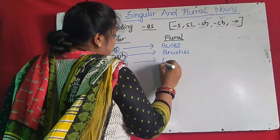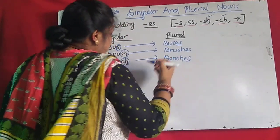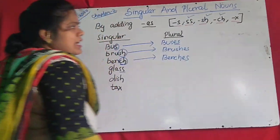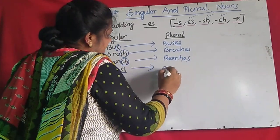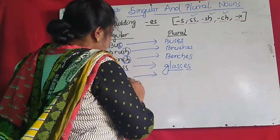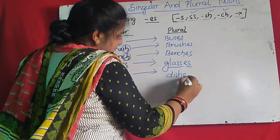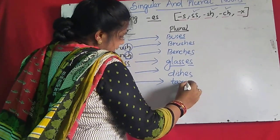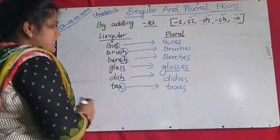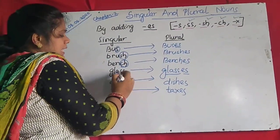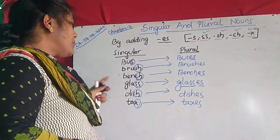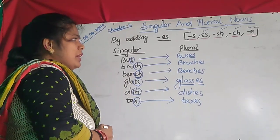Suppose 'bus' — the word 'bus' is ending with S, so your plural will be B-U-S-E-S: 'buses,' adding ES. 'Brush' — last two letters are SH, so plural will be B-R-U-S-H-E-S: 'brushes.' Then 'bench' — ending with CH — plural will be B-E-N-C-H-E-S: 'benches.' 'Glass' — ending with SS — plural will be 'glasses,' adding ES. 'Dish' — ending with SH — plural will be 'dishes.' 'Box' — last letter is X — plural will be 'boxes.' So words ending with S, SH, CH, SS, or X form the plural by adding ES. You have to remember these rules; if you remember the rules, you can easily change to plural.